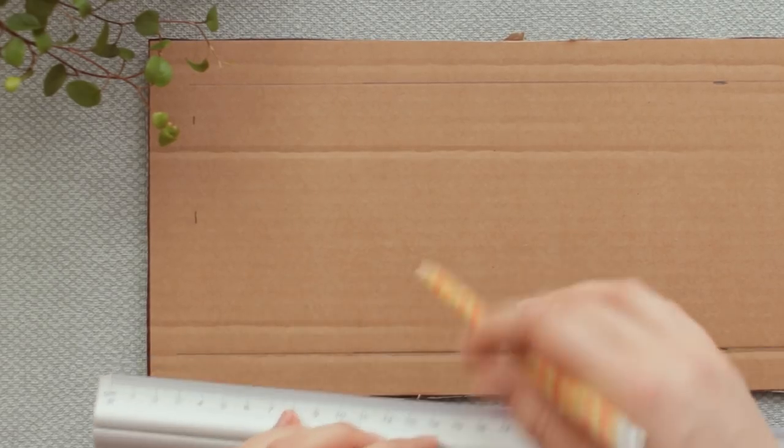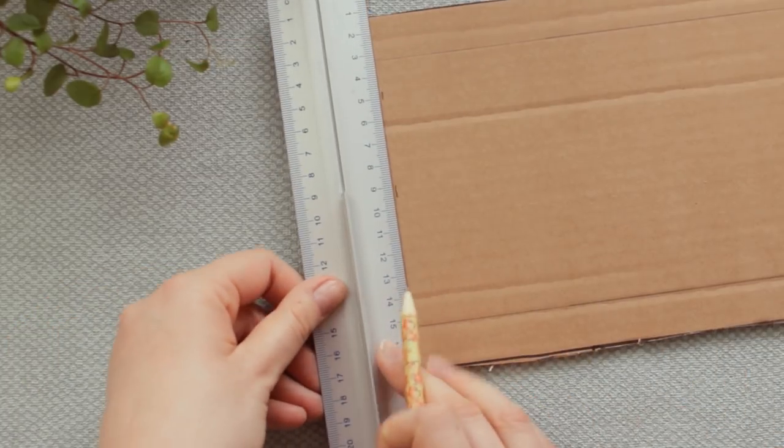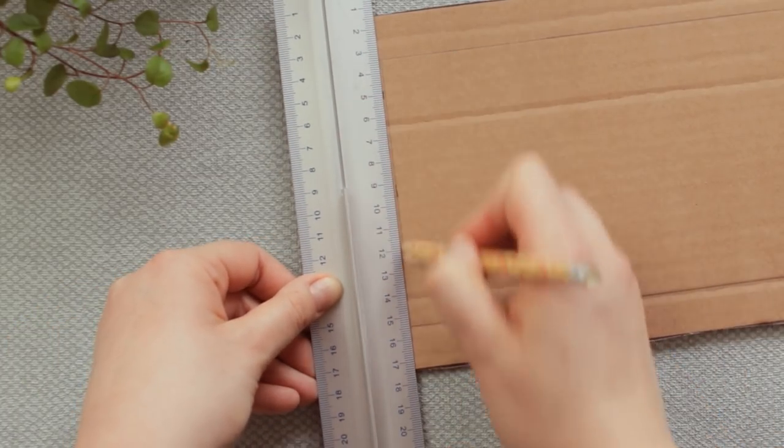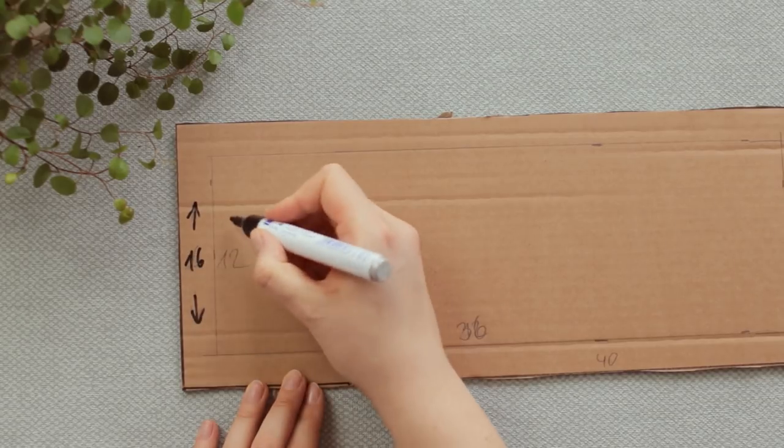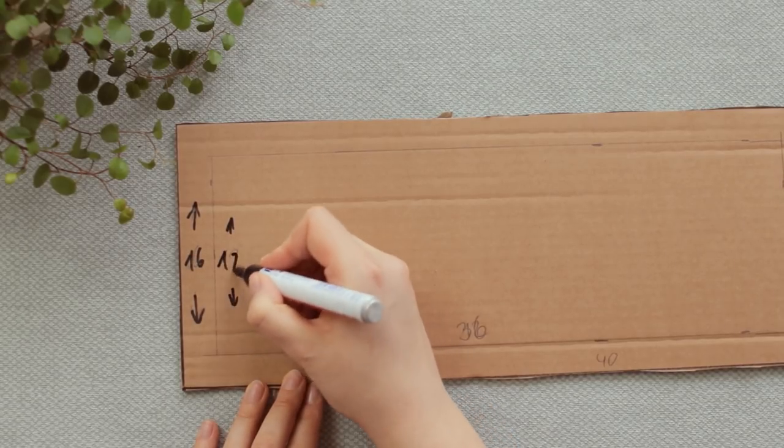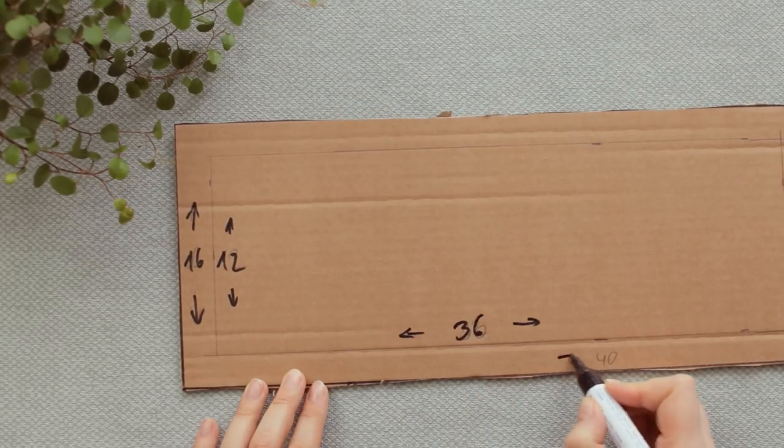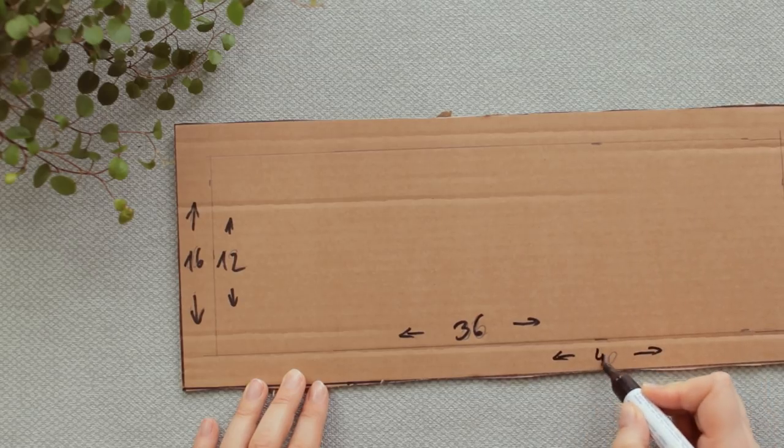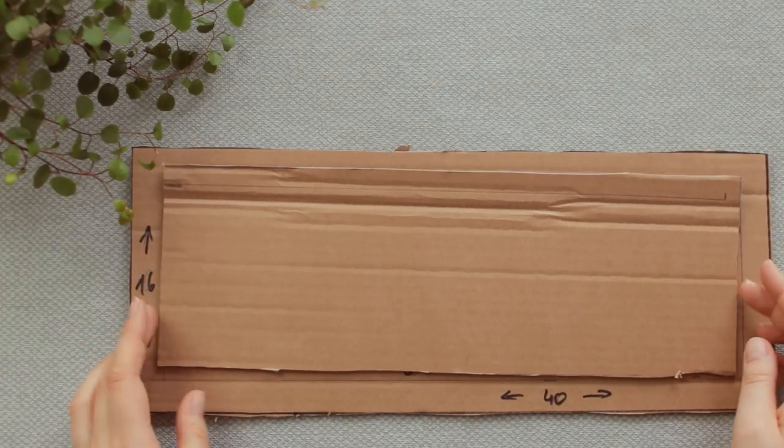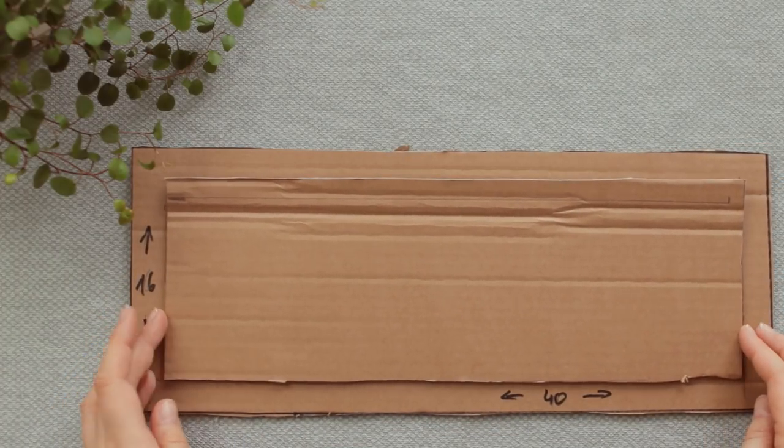I wanted the walls of the planter to be about two centimeters so I measured out two centimeters on each side. So we have 16 by 40 centimeters for the outer side of the mold, and 12 by 36 centimeters for the inner mold. Using these measurements or the measurements of your choice, we can now create the bottom of the second mold.